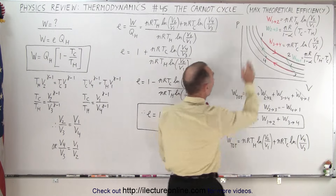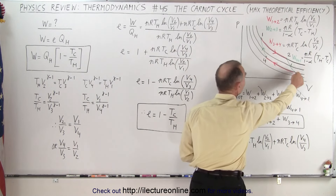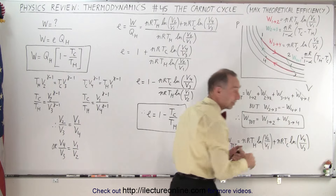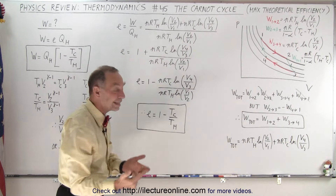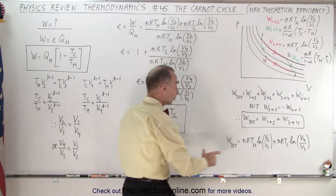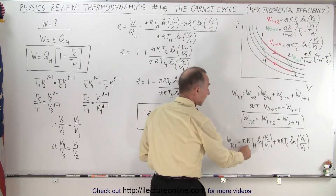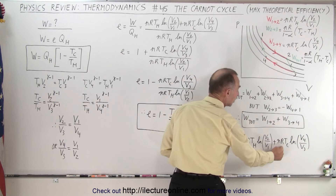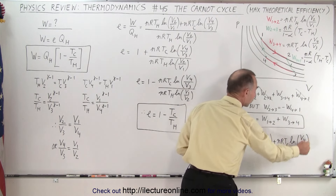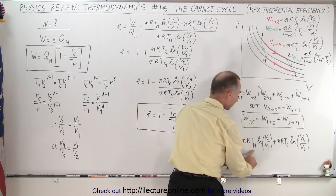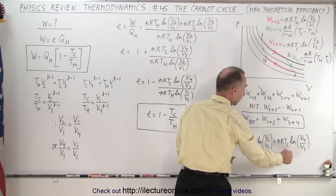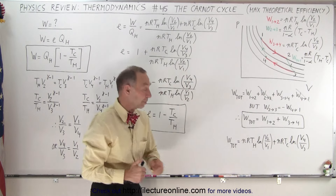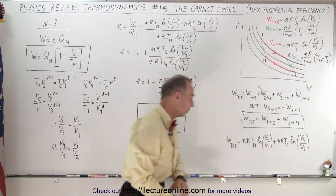Going from 1 to 2, that's positive work. Going from 3 back to 4, that's negative work. Writing the equations for those two isothermal processes, we get nRT times the natural log of V2 over V1, and then nRT times the natural log of V4 over V3. Notice that here it's the hot temperature because we're on the top process, and here it's the cold temperature for the bottom process. Adding those up, we realize that the second term is negative.